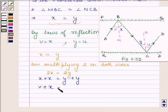And since Y is equal to U, replacing one Y by U, we have on the right hand side U plus Y. Now V plus X is angle ABC and U plus Y is angle DCB.